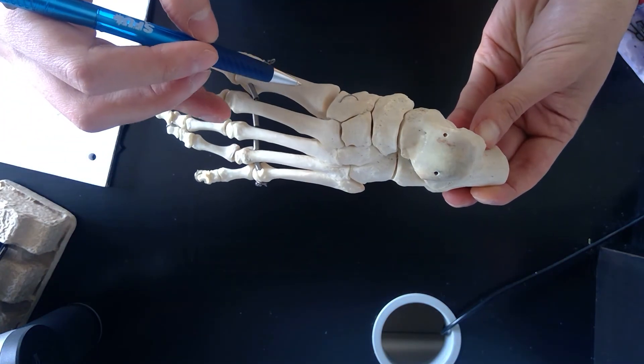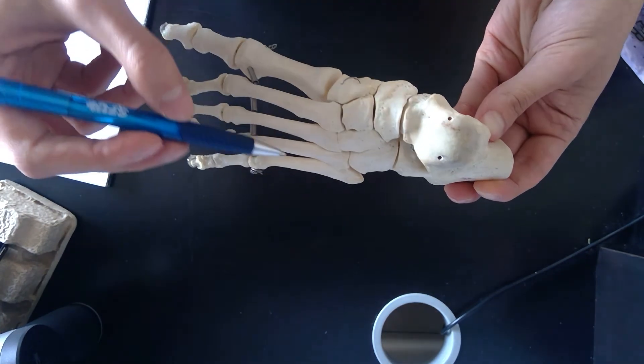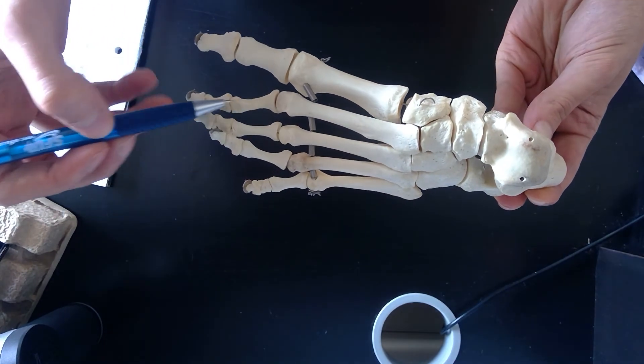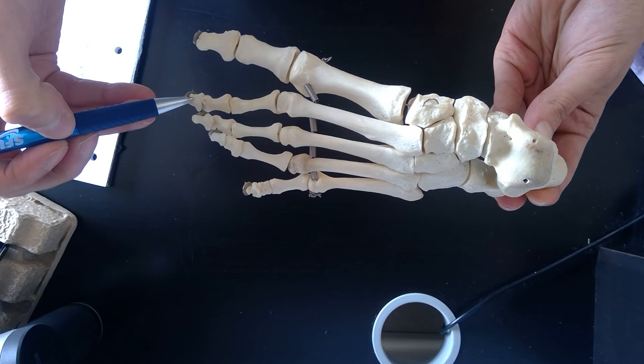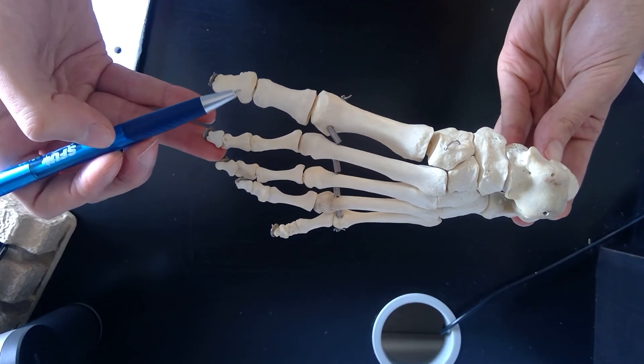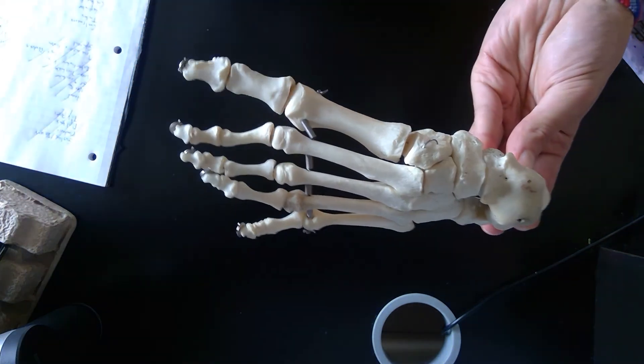And once again we have the first metatarsal, the fifth metatarsal, and our proximal, middle, and distal phalanges, with exception to the big toe which is just the proximal and the distal phalanges.